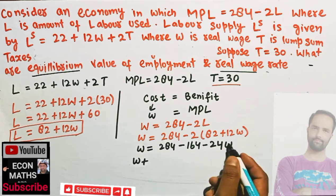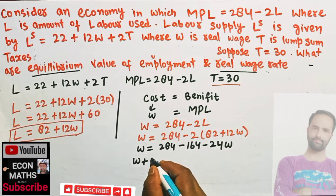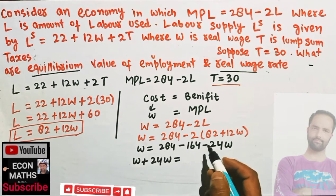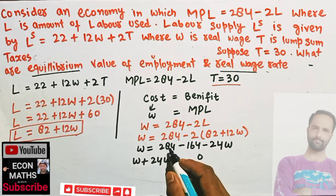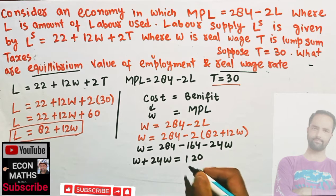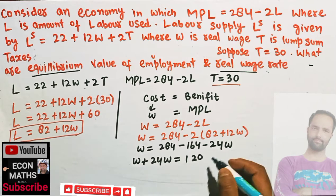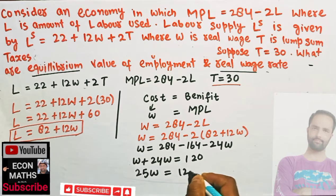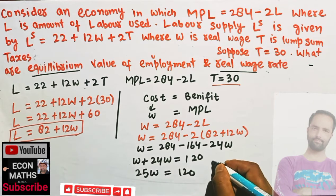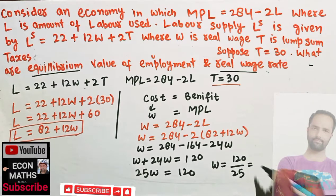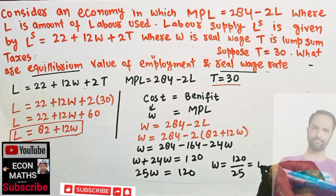Transposing the negative term, we get 24W on the left side. So we have 25W equals 284 minus 164, which equals 120. Therefore W equals 120 divided by 25, giving us an equilibrium real wage rate of W equals 4.8.